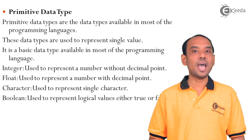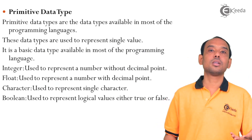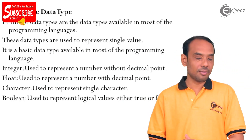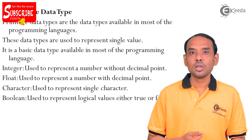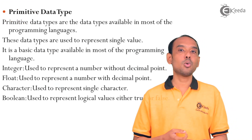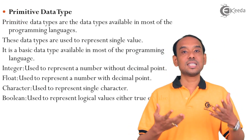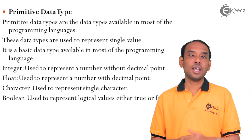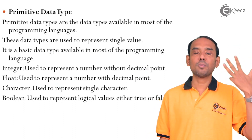Primitive data types, as the name suggests, are primitive and built-in, provided by the various programming languages. All programming languages have these built-in data types. Primitive data types are usually used to store a single value. Examples include integer, float, character, and boolean.